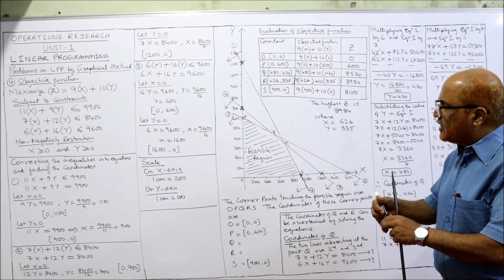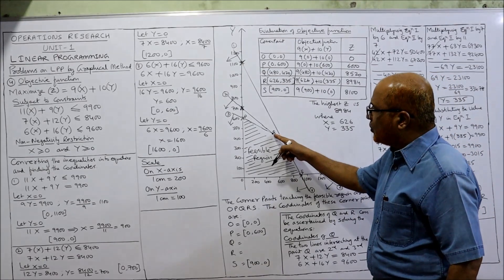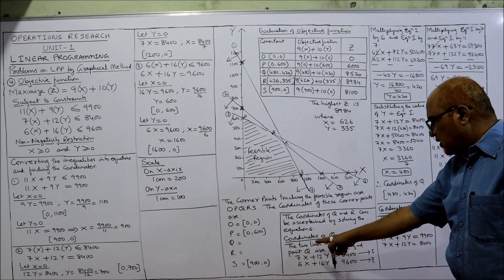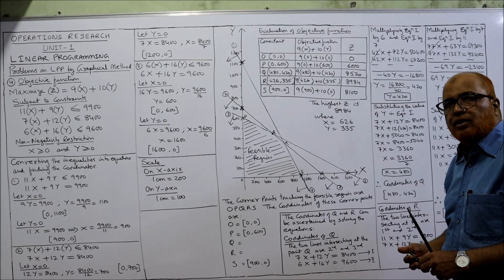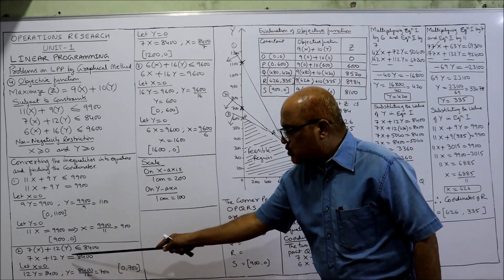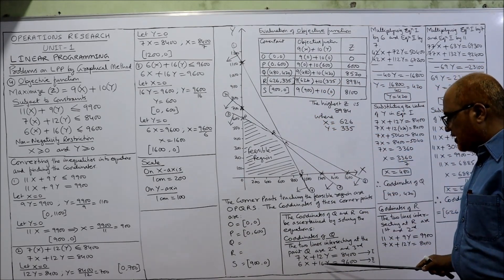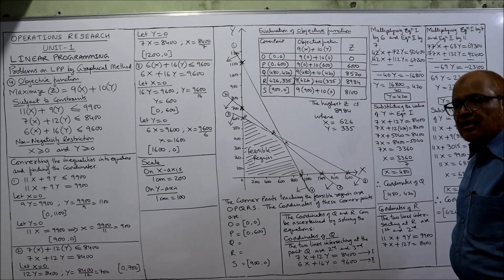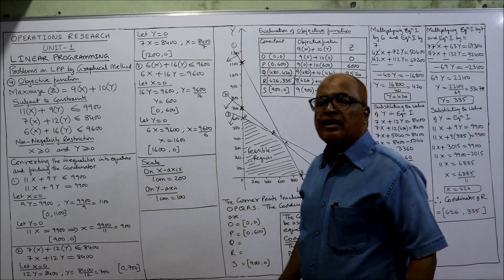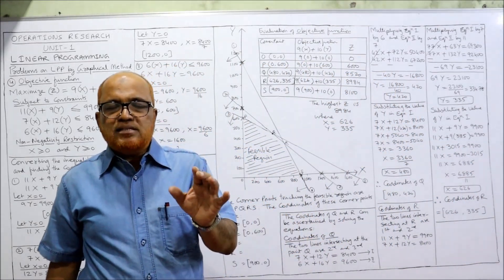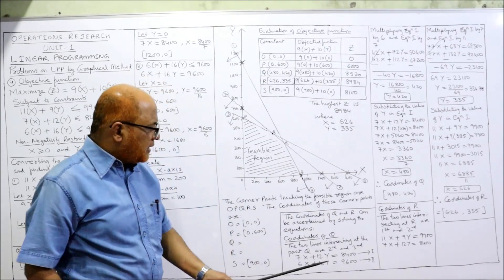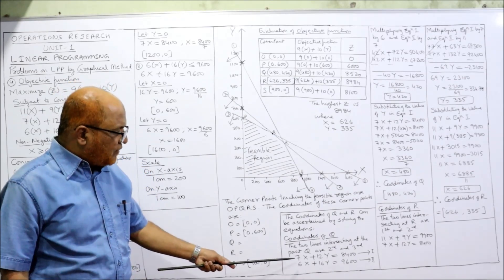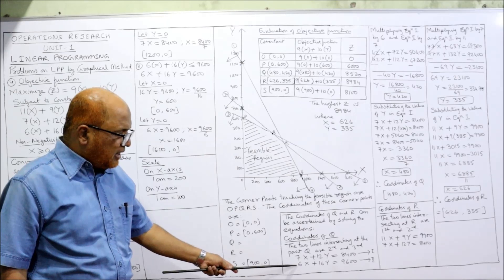To find Q, the two lines intersecting are the second and third. Second equation: 7x + 12y = 8400. Third equation: 6x + 16y = 9600. To cancel x, we make the coefficients equal. The coefficient of x is 7 in the first and 6 in the second. Multiply the first equation by 6 and the second equation by 7 to get 42x in both.